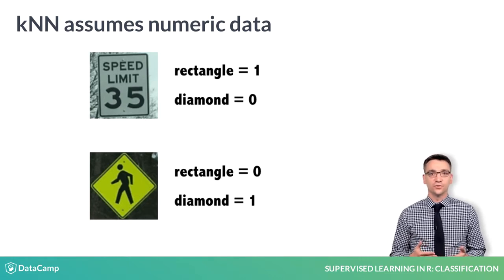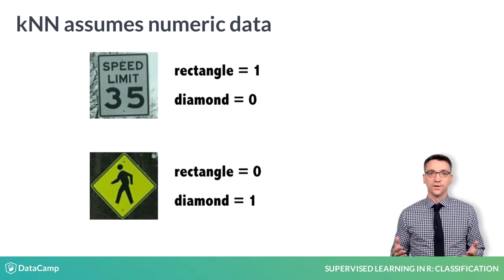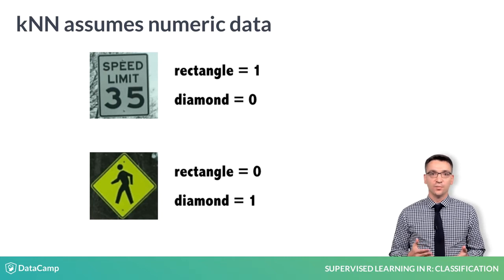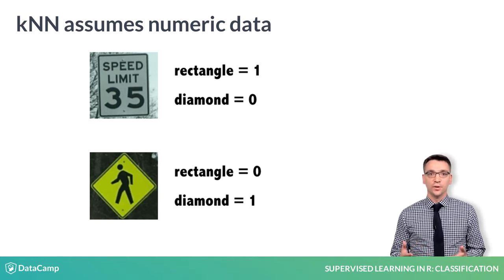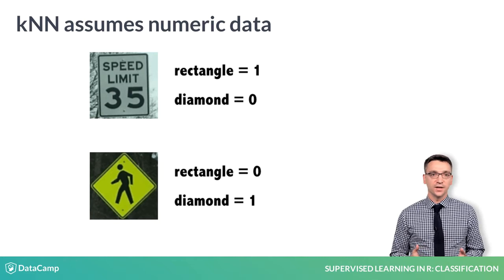Dummy coded data can be used directly in a distance function. Two rectangle signs, both having values of one, will be found to be closer together than a rectangle and a diamond.